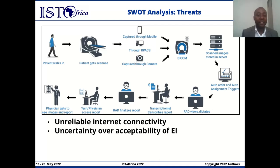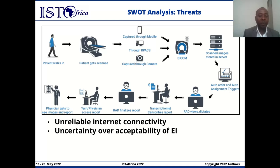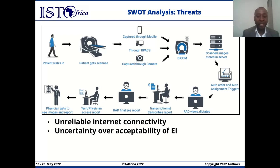Threats: even though internet connectivity is being facilitated in the different government departments and facilities, the internet connectivity is unreliable. Secondly, there is still uncertainty over the acceptability of integration of the various imaging departments into a unified enterprise imaging strategy.